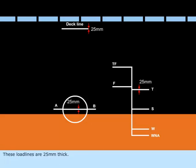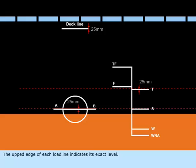These load lines are 25mm thick. They are painted in white or yellow on a dark background or in black on a light background. The upper edge of each load line indicates its exact level.